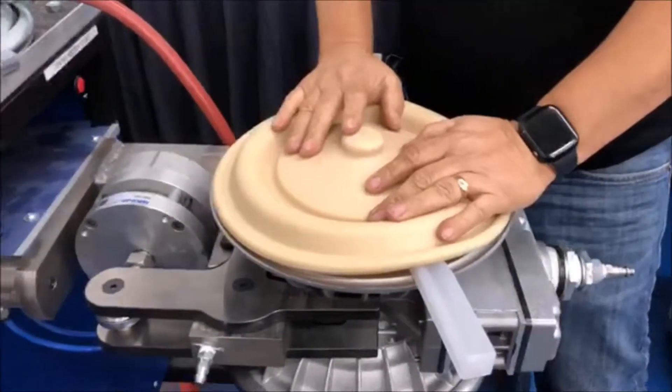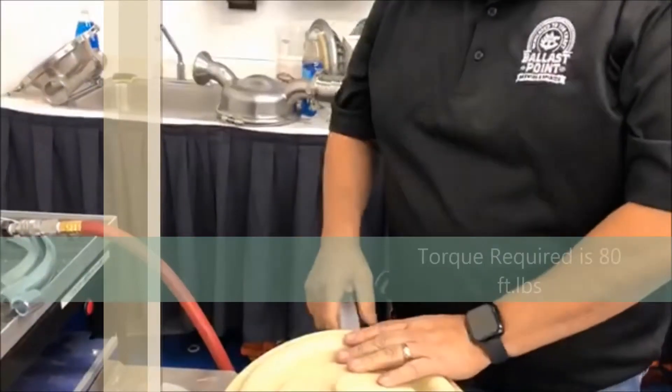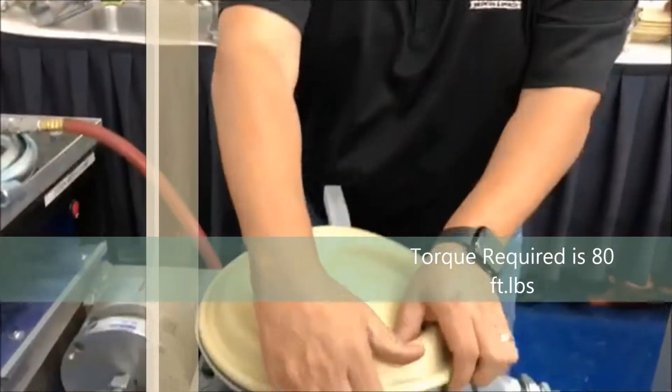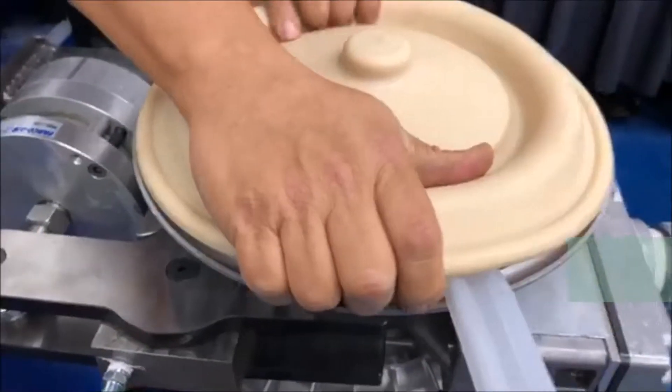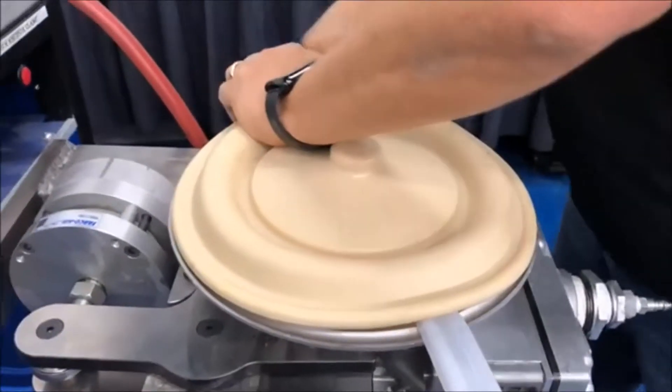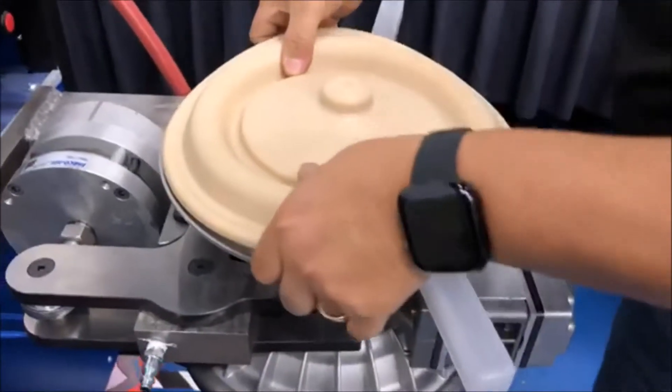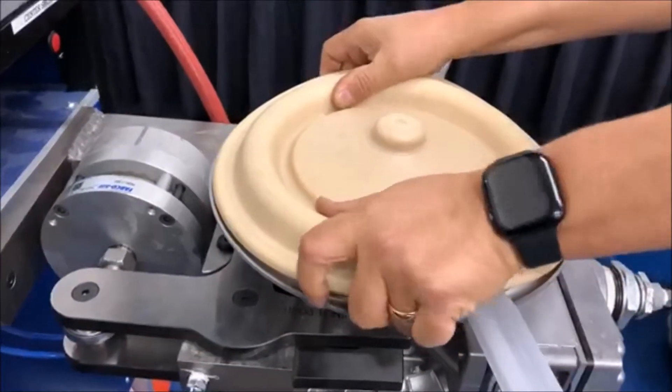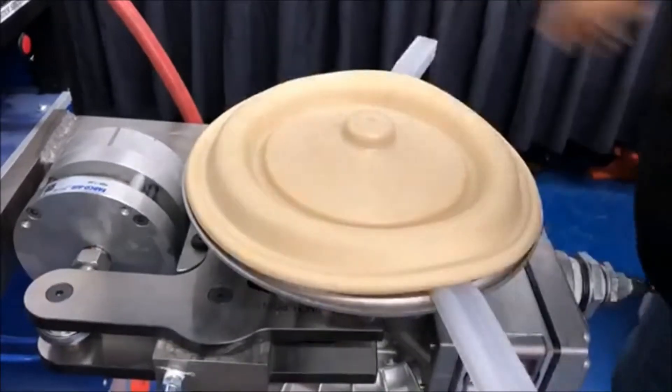So you want to get about a good 75 foot pounds of torque on there. So it makes it a little tough. But once you get as tight as you possibly can go, that's when you know you're there. Okay, we're good there.